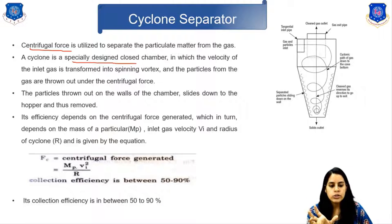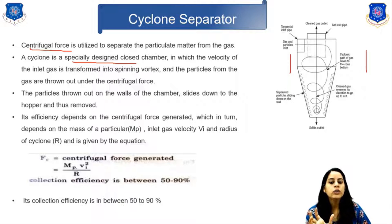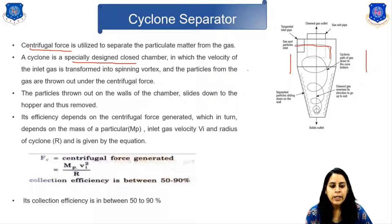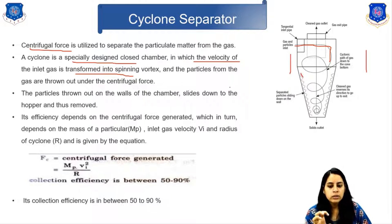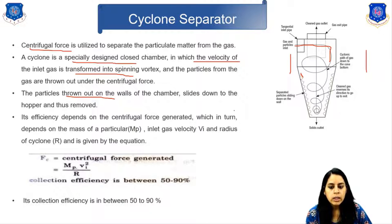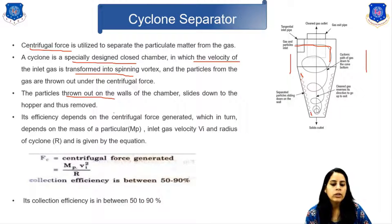A cyclone is a specially designed closed chamber where the velocity of the inlet gas is transformed into a spinning vortex. Particles from the gas are thrown outward under centrifugal force onto the wall of the chamber, then slide down to the hopper where they are collected. Due to the high velocity, particles are thrown to the wall and collected into the hopper. Efficiency depends on the centrifugal force generated, which depends on the mass of the particulate, inlet gas velocity Vi, and the radius of the cyclone.